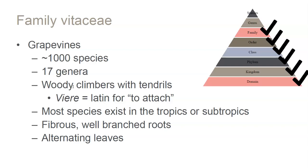Within the family of Vitaceae there are about a thousand different species and 17 different genera. The name comes from a Latin word meaning 'to attach' — they climb using little tendrils, which I'll show you when we talk about anatomy. Most of these species exist in the subtropics and tropics. Our grapevine, Vitis vinifera, originated in Eurasia and the Transcaucasus, somewhere around modern-day Georgia. Generally they have fibrous, well-branched roots.